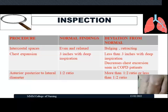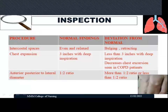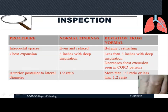Next, assess the intercostal spaces — the spaces between the ribs. Normal finding: they are even and relaxed. Abnormal: if the intercostal spaces are either bulged or retracted, this is considered abnormal. Then assess chest expansion: normally the chest should expand about three inches with deep inspiration. If less than three inches, this is abnormal and can be seen in COPD patients due to fibrosis preventing full lung expansion.